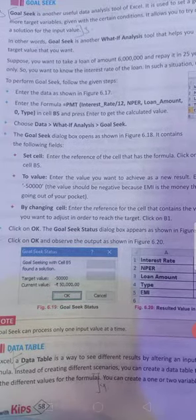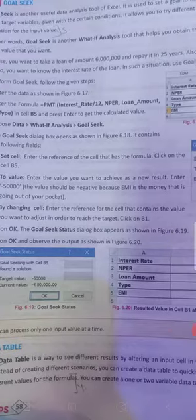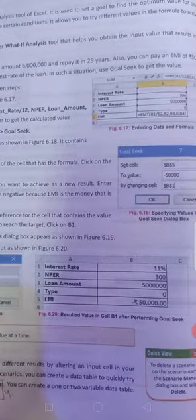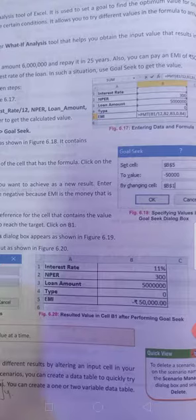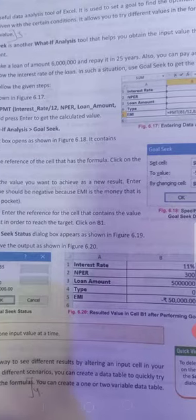So what we do, enter the data as shown in figure 6.17. In this they have fixed everything, 25 years and after that loan amount.